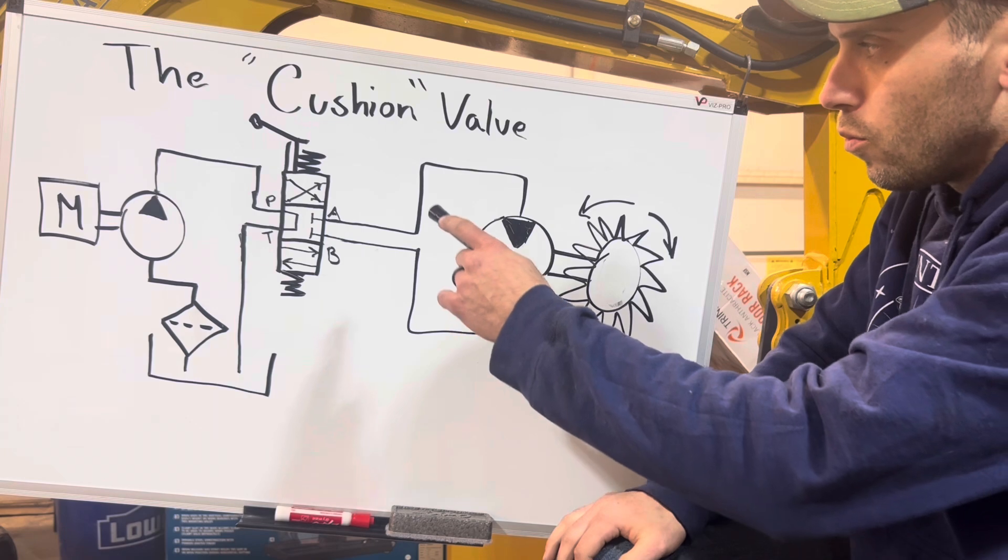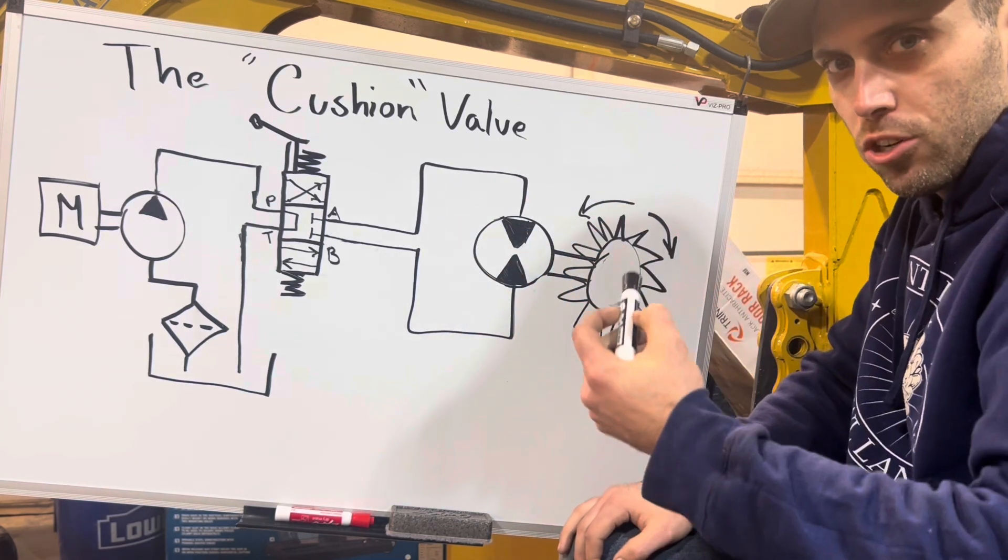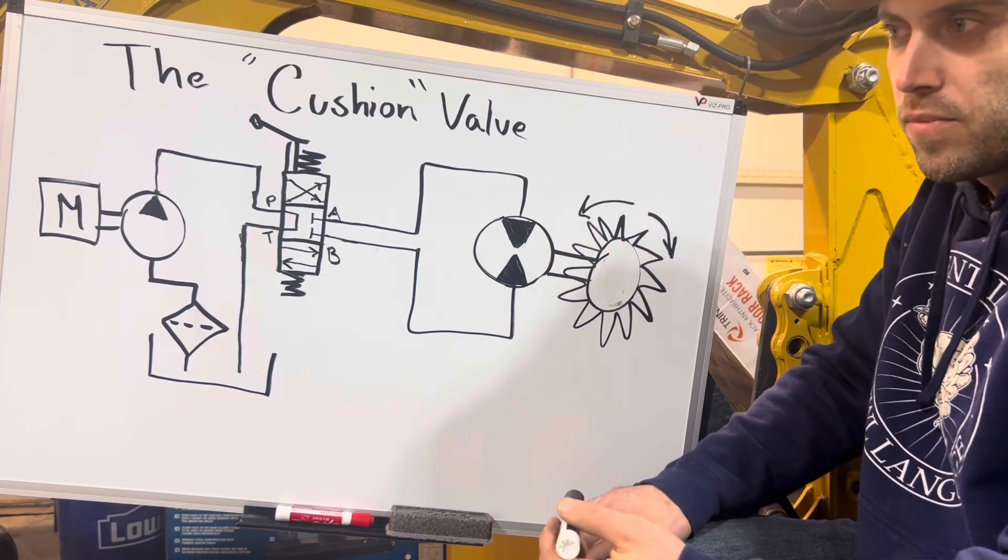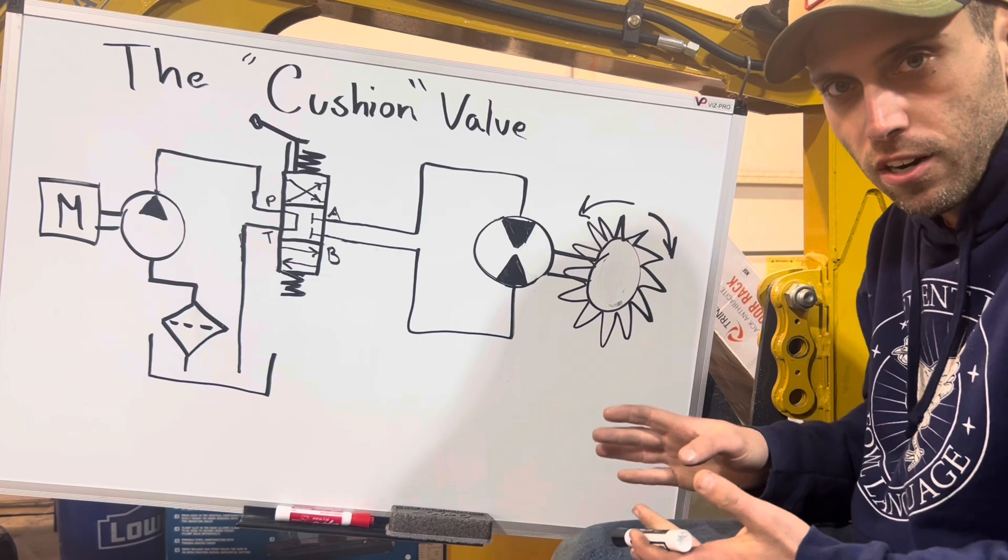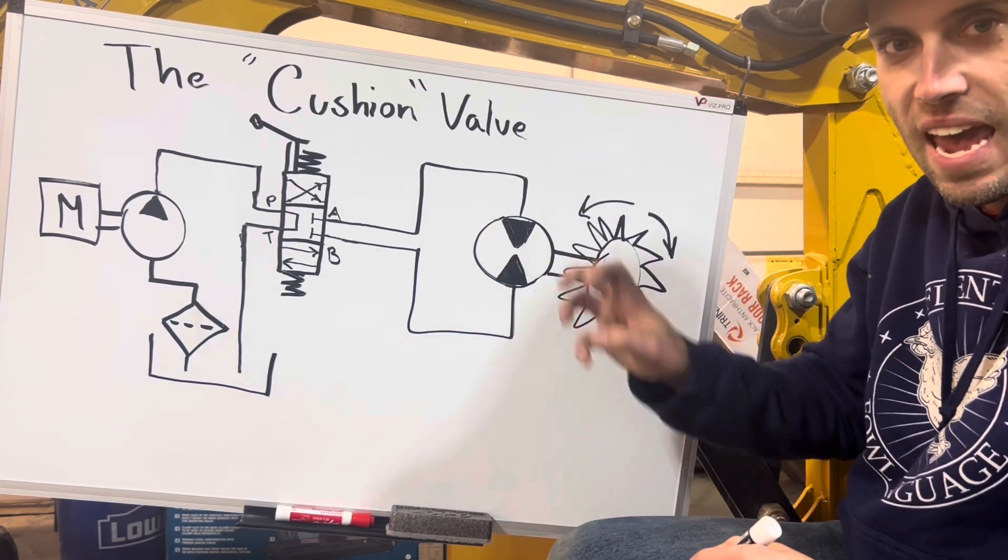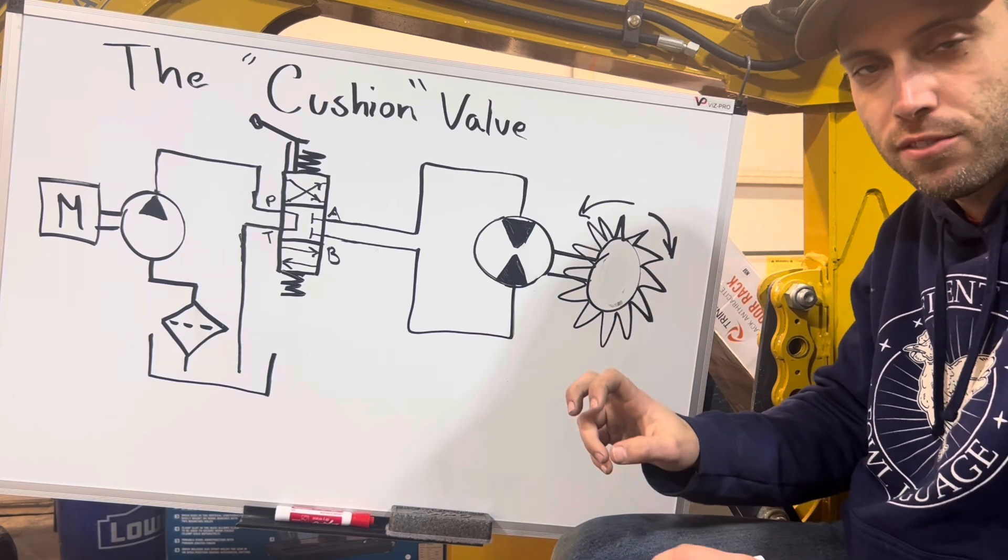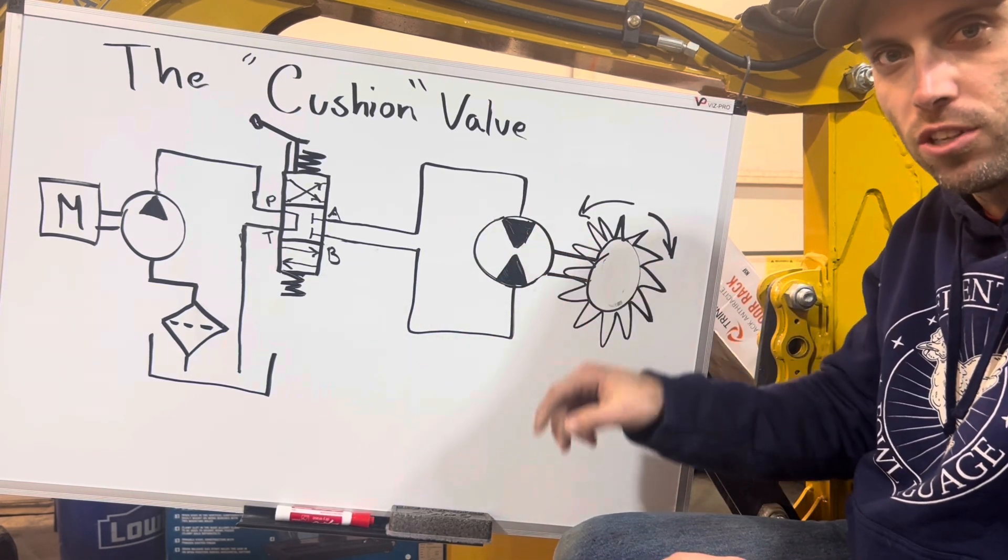So this type of hydraulic system, without the addition of a cushion valve, it's prone to this type of issue, especially when you're dealing with cheap imported parts. So what I'm going to do now, I'm going to alter this drawing to add in a cushion valve. And we're going to explain how that actually fits into this picture.